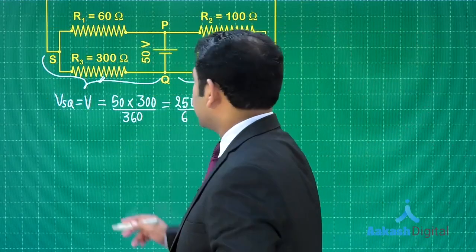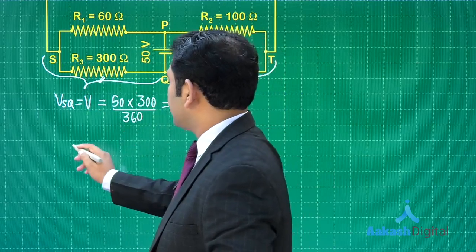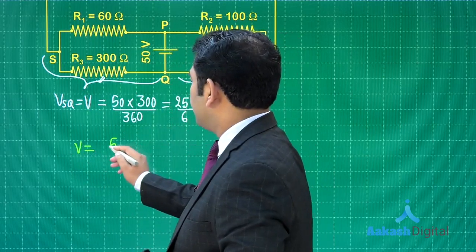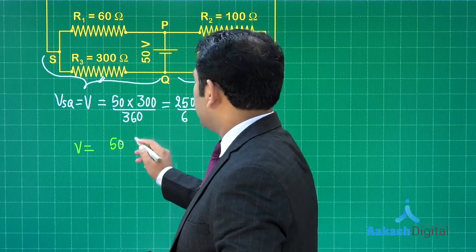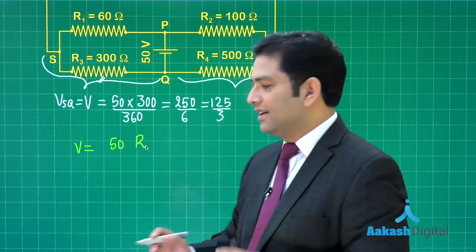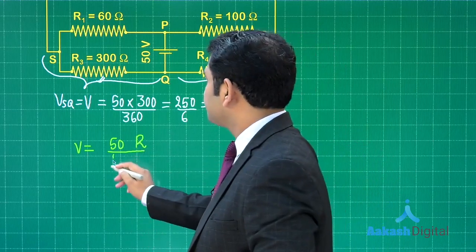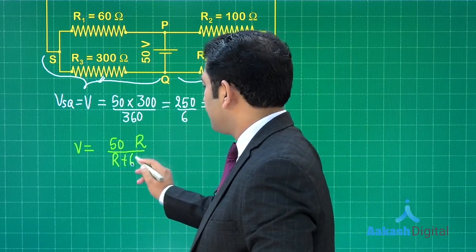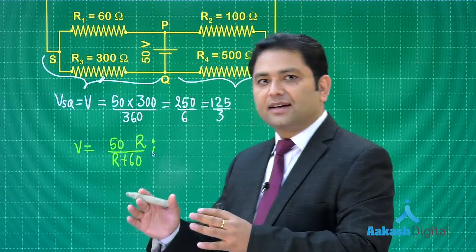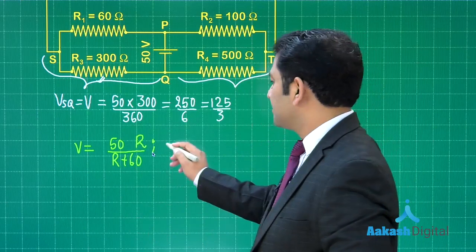I will do something like this: the potential difference across this, let me write it in terms of variable now, that will be 50 multiplied by r, let me call this as r because this is variable, divided by r plus 60. Now what I will do is that let me take log both sides.